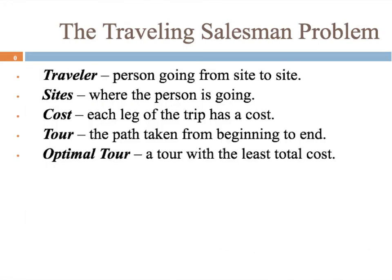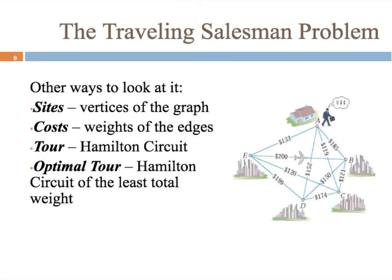Here's some vocabulary: the traveler is the person — or bus, ship, aircraft — going from site to site. The sites are where the traveler is going. The cost is what each leg of a trip incurs. The tour is the path taken from beginning to end, and the optimal tour is the tour with the least total cost. In graph terms: sites are the vertices, costs are the weights of the edges, the tour is the Hamilton circuit since we have to make it back home, and the optimal tour is the Hamilton circuit of least total weight.